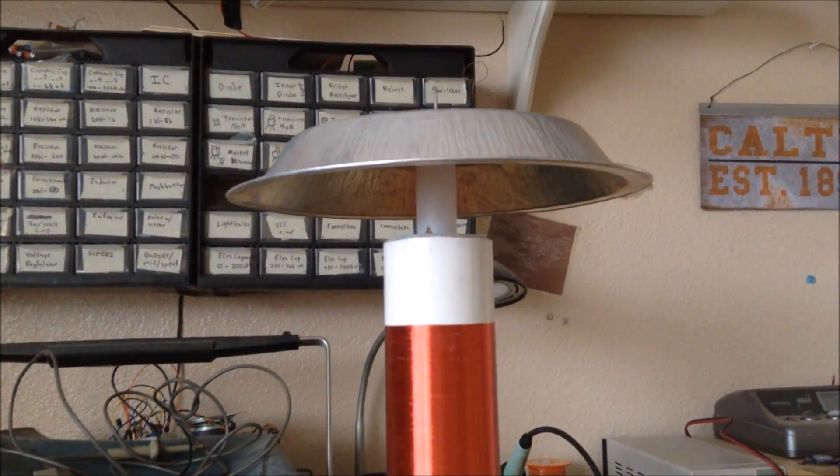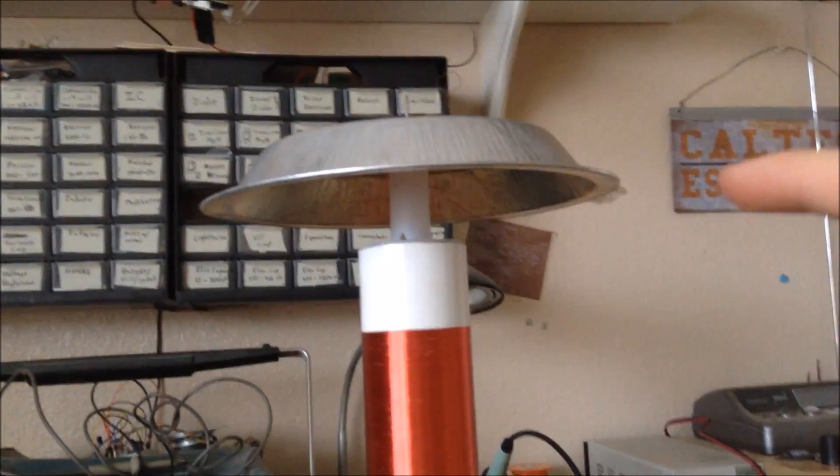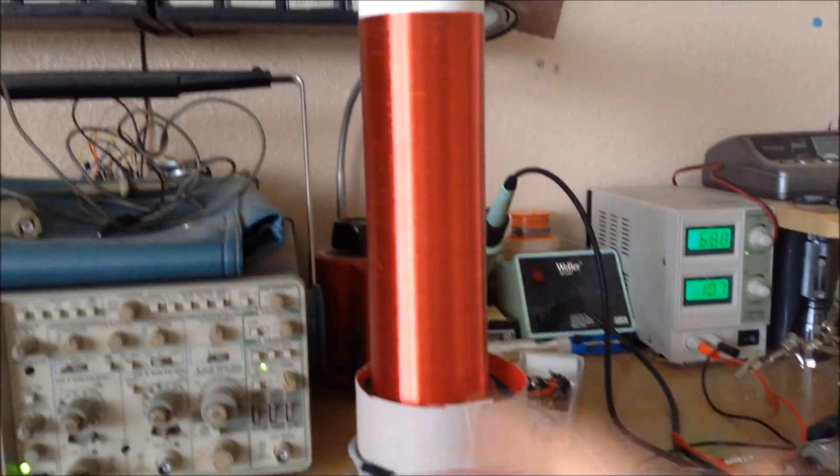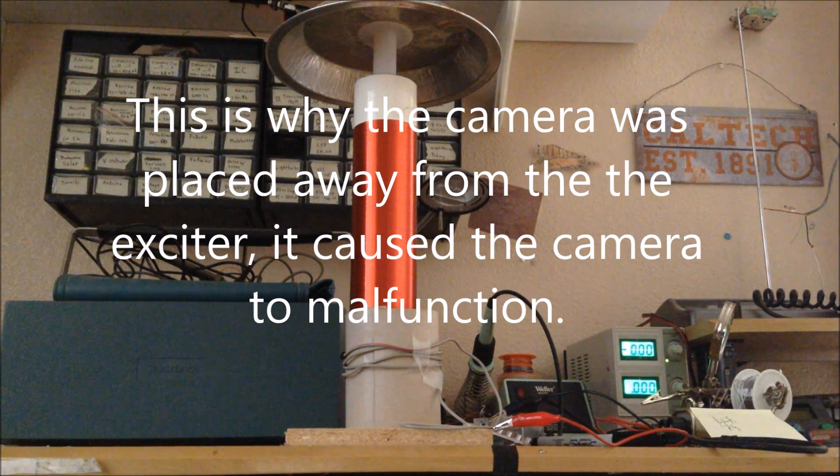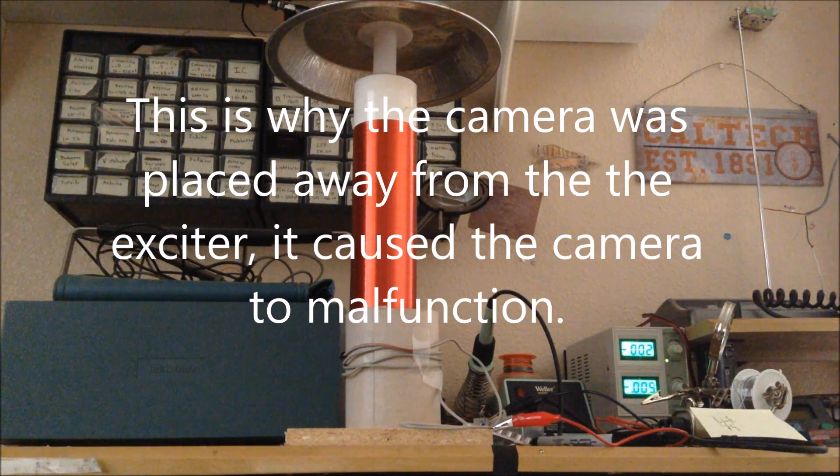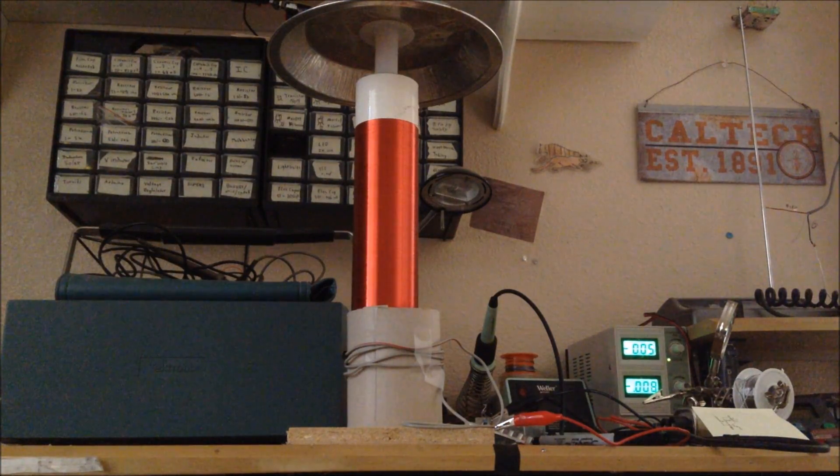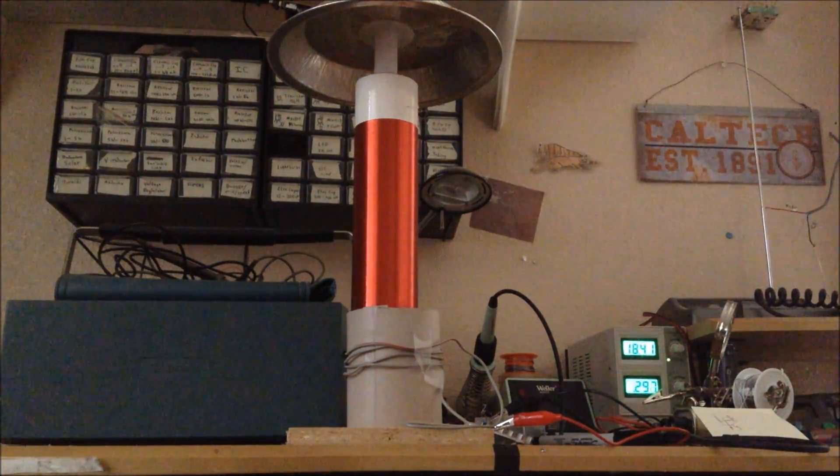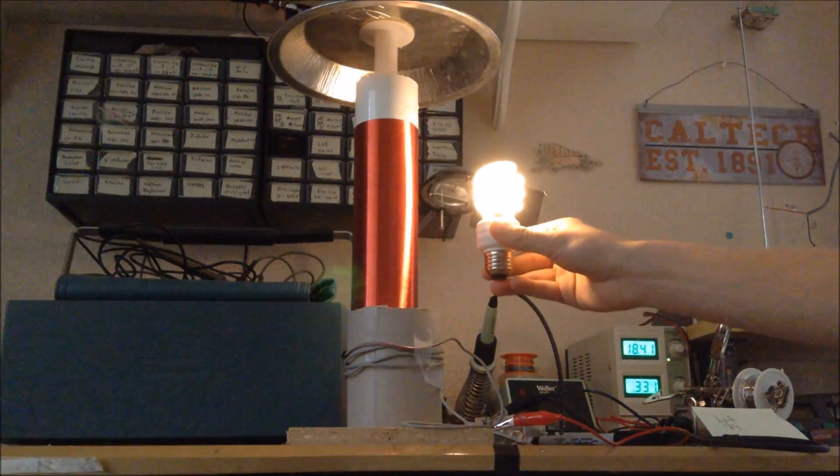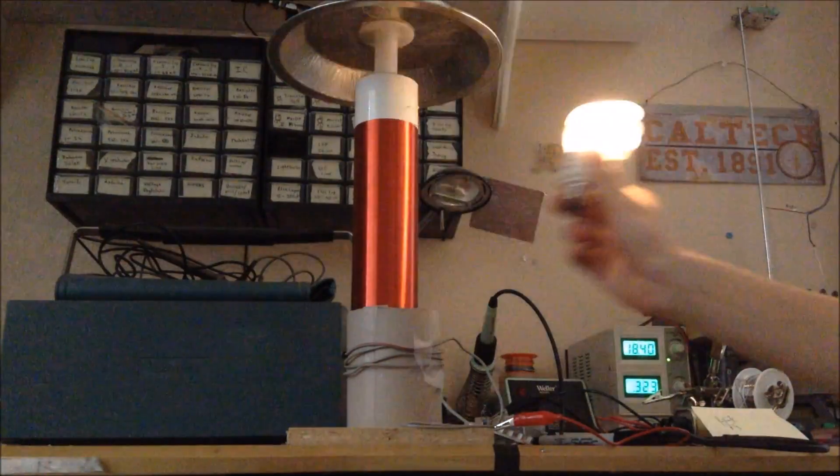That is the resonant frequency created by this top load capacitor and this coil. Always remember to keep important electronic devices away from the Slayer Exciter because it interferes with them. The Slayer Exciter can do some pretty cool things when it's running, such as taking this CFL light bulb and lighting it up completely when it's near the Slayer Exciter.